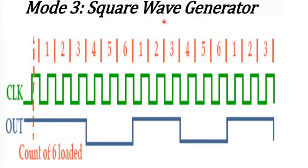In mode 3 (square wave generator), the output is a square wave. The frequency of the square wave equals the clock frequency divided by the number written into the count register. If the count is an even number, the output will be high for half the count and low for half the count. If the count is odd, the output will be high for (N+1)/2 counts and low for (N-1)/2 counts, so the output waveform will not be symmetrical.